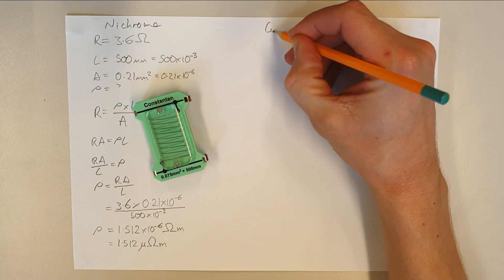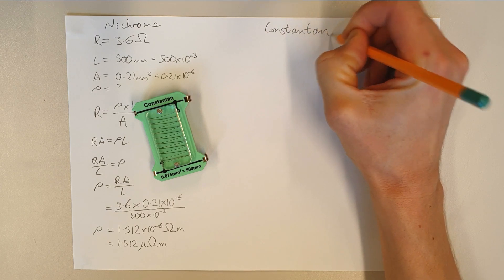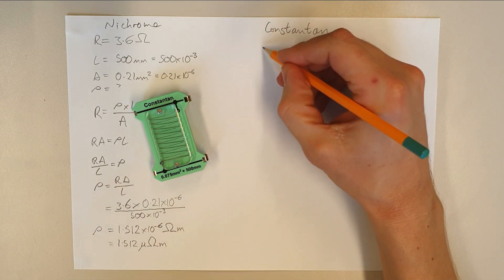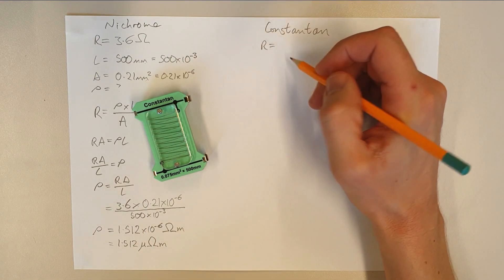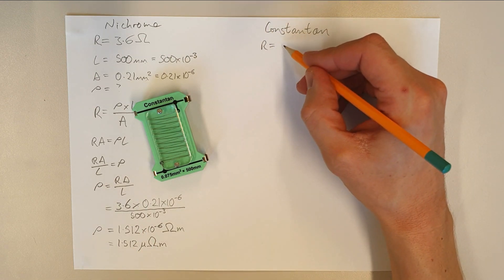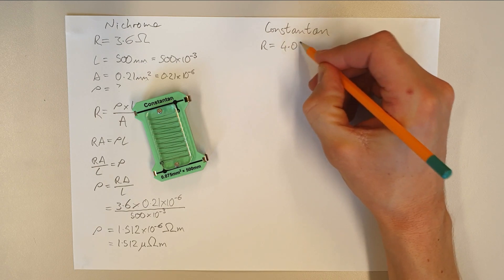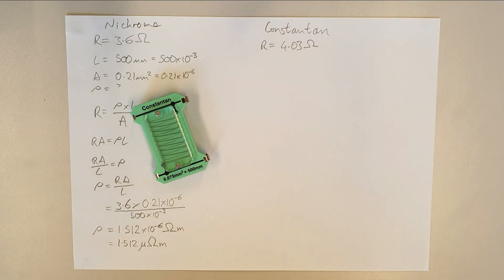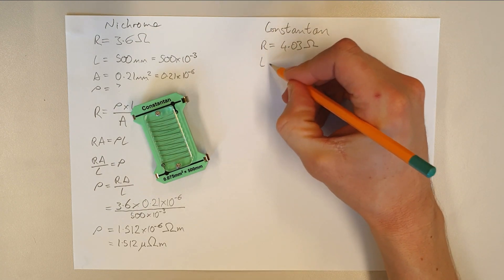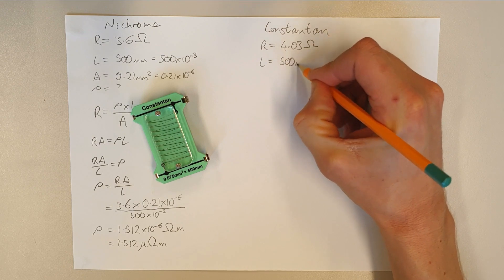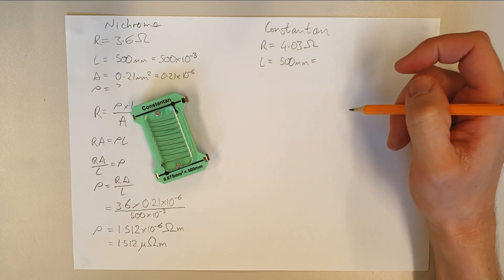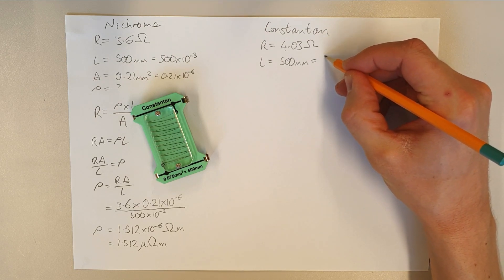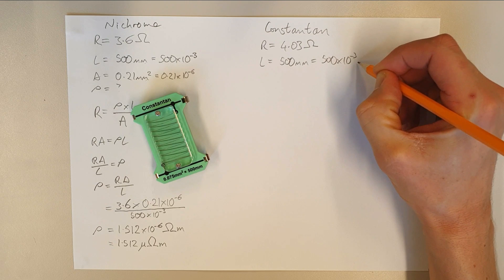So we're now going to try and find our resistivity of Constantan. So we've got here a resistance that we measured, so R is for resistance, and we measured that at 4.03 ohms is what that came out at. And you can see we've got the same length we had before, which is 500 millimeters. And again, we're going to change that into meters. We're going to change that into the base unit. So that comes out at 500 times 10 to the minus 3 meters.